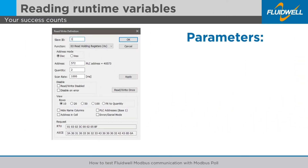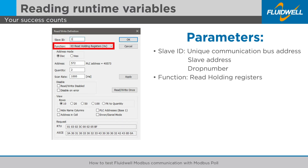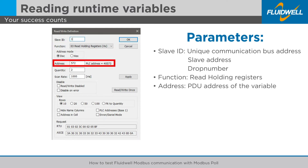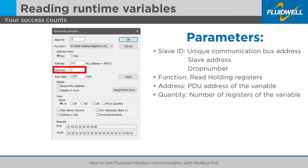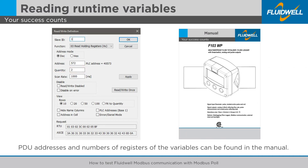For reading runtime variables, you will need to set the following parameters. Slave ID – this is the unique communication bus or slave address or drop number. Function – for reading from Fluidwell devices, select 03 read holding registers. Address – this is the PDU address of the variable. Quantity – this indicates the number of registers of the variable. PDU addresses and numbers of registers can be found in the manual of the Fluidwell device.